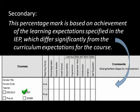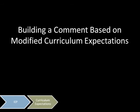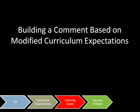For students at the secondary level with modified curriculum expectations stated on their IEP, the IEP box is checked and the statement is included in the comment box. We will build a comment by first considering the IEP, the curriculum expectations previously chosen, and the learning goals and success criteria, using the comment framework.